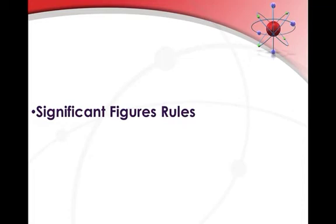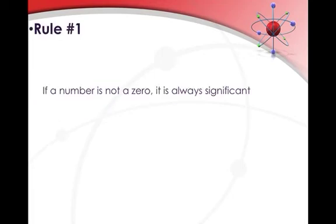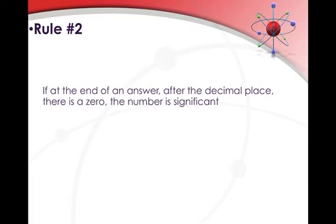On to the last part of our video. In this part we're going to be looking at significant figures, starting off by looking at the rules behind significant figures. There are six key rules you need to remember — there'll also be a link in the video description where you can get a copy of these rules, because they're very important to know. The first rule is: if a number is not zero, it is always significant. So basically if we have any number one through nine and it's not zero, it is always significant — there are no cases where a non-zero number is not significant.